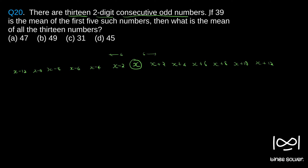Now, it is given that 39 is the mean of the first five numbers. The first five numbers are x−12, x−10, x−8, x−6, x−4. The mean of these five consecutive equally-spaced numbers is simply the middle number, since there is an odd count of numbers.